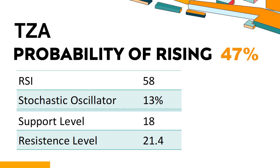TZA has a 47% probability of rising stock price. When the probability of rising is lower than 50%, the probability of falling is relatively high. Combining multiple technical analysis indicators, TZA has four bullish signals and two bearish signals. TZA's short-term support level is 18.8; if it falls below 18.8, it will have a chance to test 18. The short-term resistance level is 20.8; if it breaks through 20.8, it will look up to 21.4.